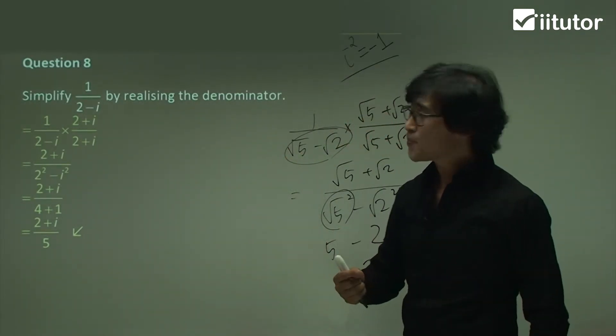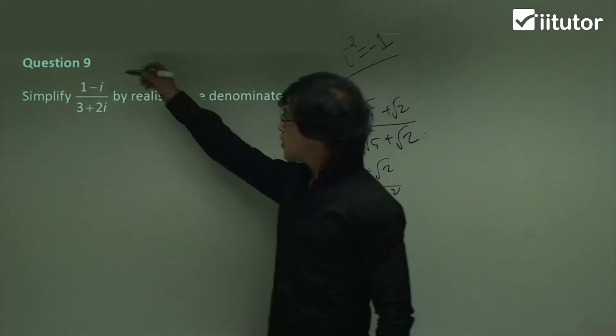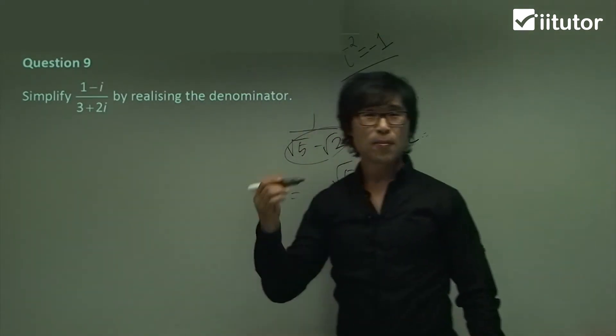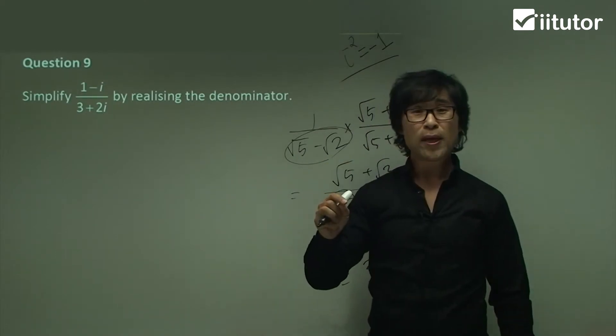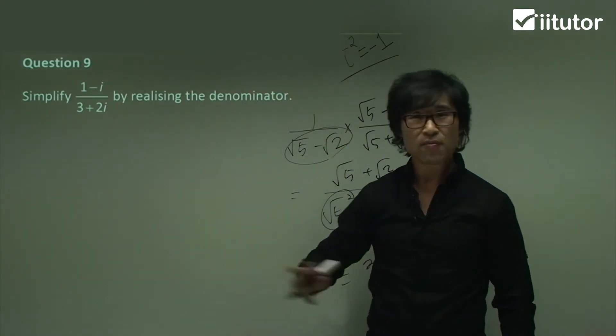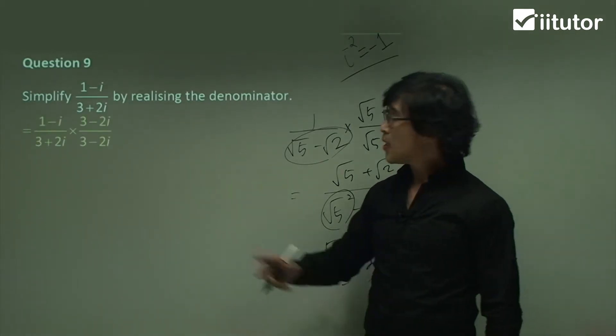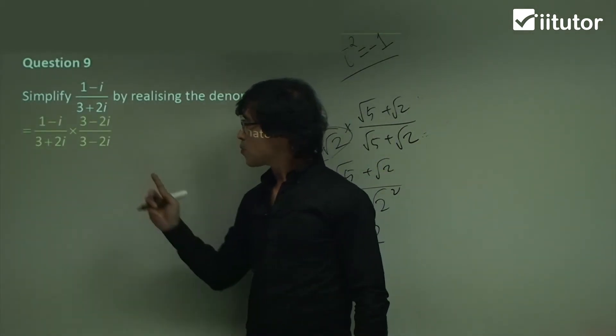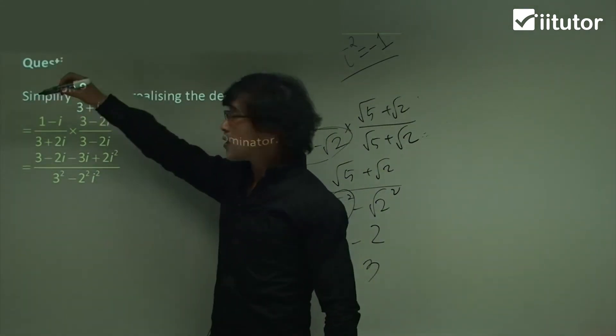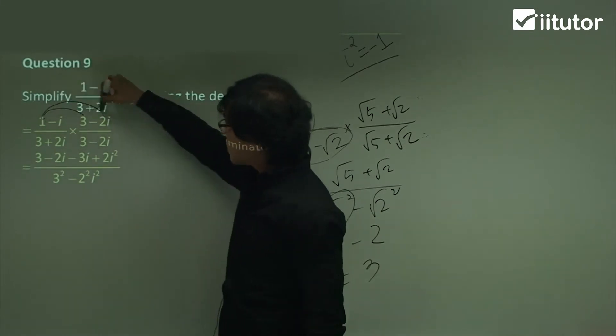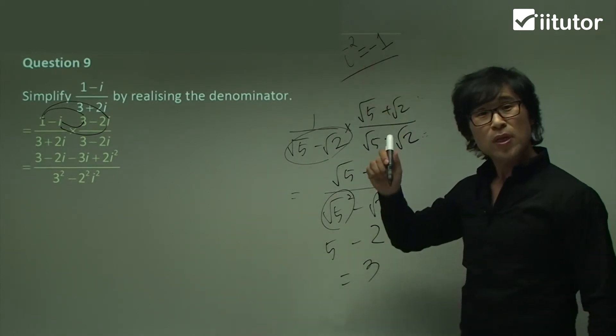Let's do question 9. Compared to question 8, the numerator has something. Still, we need to find out the conjugate pair and multiply up and down. Nothing different. Let's do it. Multiply that. Expand everything. So a squared plus b squared. And then the numerator is being expanded like this times this, this times this, and this times this.